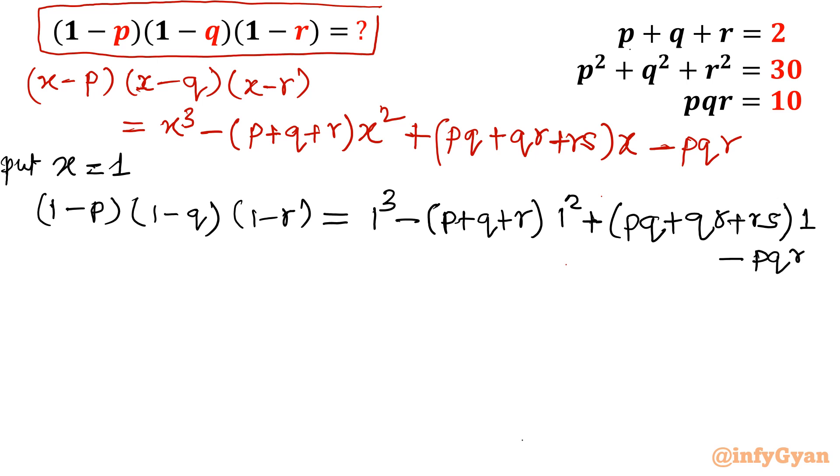So ultimate equation will be (1-p)(1-q)(1-r) is equal to 1 minus (p+q+r) plus (pq+qr+rs) minus pqr.